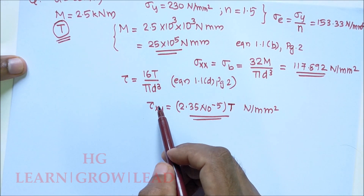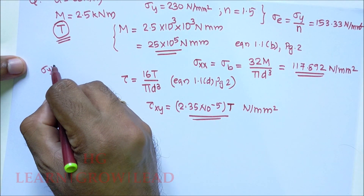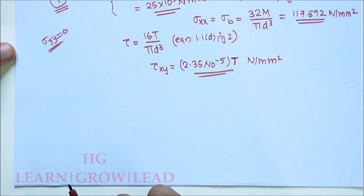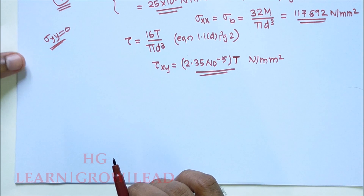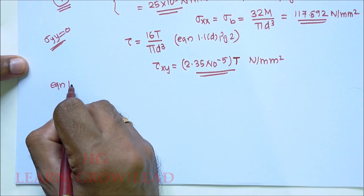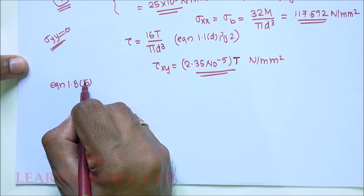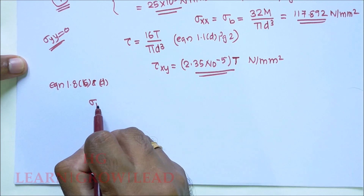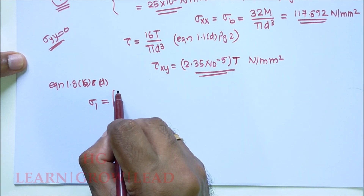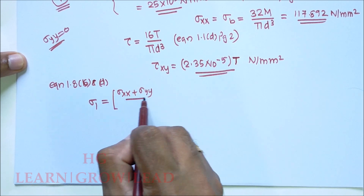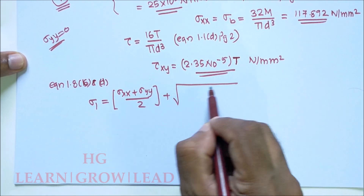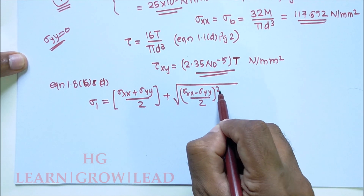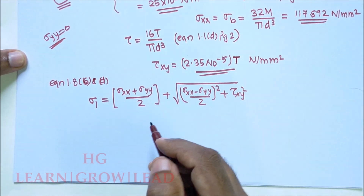We have sigma_xx and tau_xy. Since no axial load is present, the other normal stress sigma_yy is zero. We will find sigma_1 and sigma_2 according to equation 1.8c and d, page number 20. Sigma_1 equals (sigma_xx + sigma_yy)/2 plus the square root of [(sigma_xx − sigma_yy)/2]² + tau_xy².